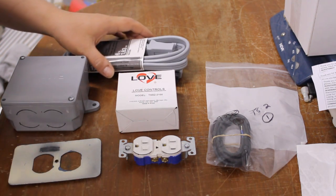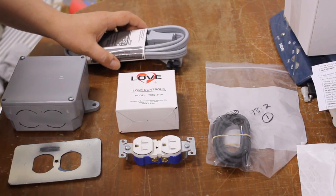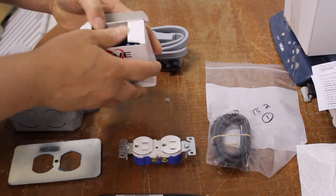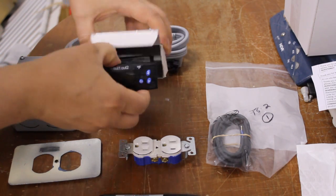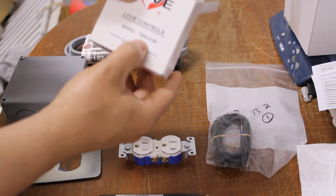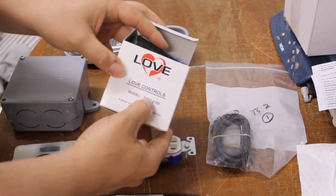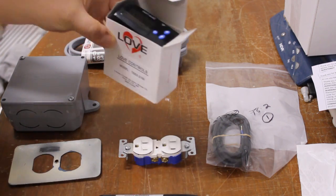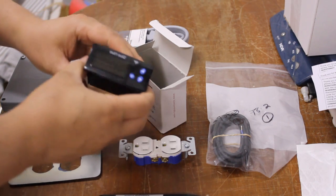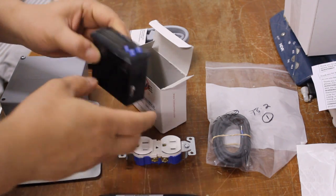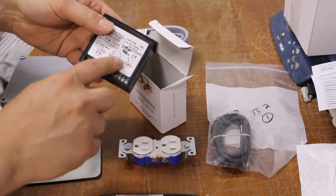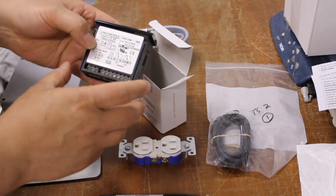I know I can buy a dual-stage Ranco controller and pretty much have it ready to go out of the box, but I wanted to try this project where I use the Love Controls dual-stage controller. This is the TSS2-2100, the one-eighth din size, nice and compact, and it does have the two separate controls basically for heating and cooling at the same time.